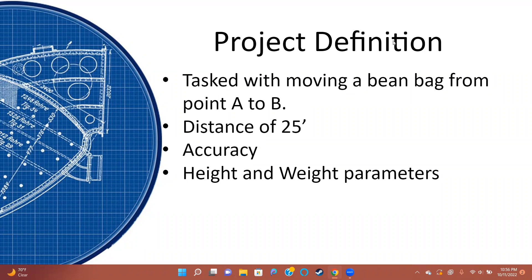We were asked to get it as far as possible and as accurately as possible. We can be successful reaching 25 feet, shooting the catapult accurately and hitting the target, staying within the height and weight parameters that were given to us, and making sure that the catapult will not fall over or break while launching.